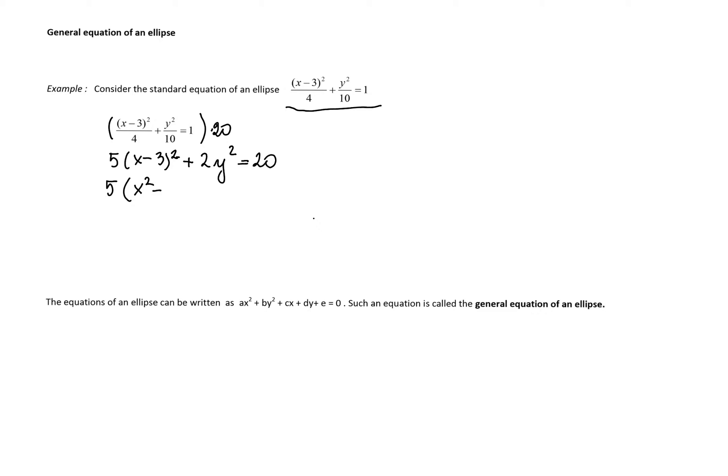We multiply both sides by the least common denominator, which in this case is going to be 20. We'll obtain 5(x-3)² + 2y² = 20.